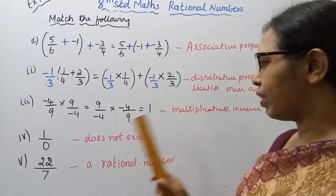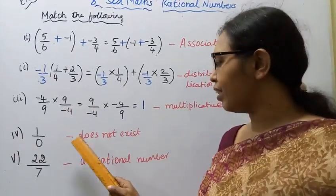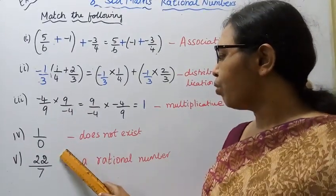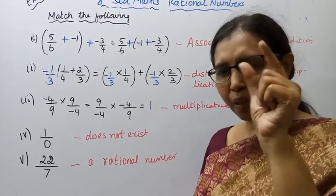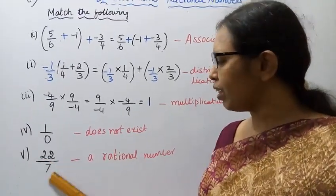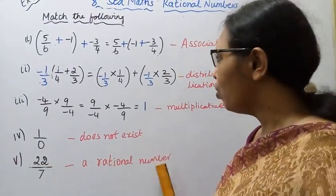Multiplicative inverse property. One by zero, therefore does not exist. Twenty-two by seven, a rational number.